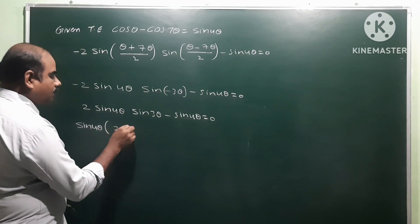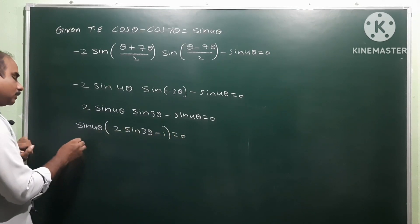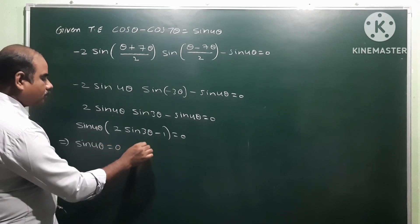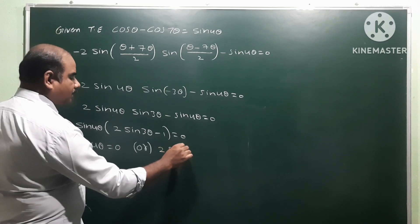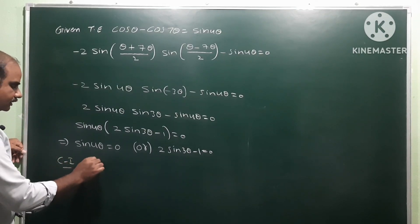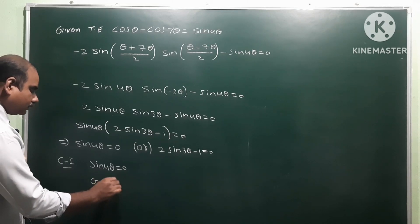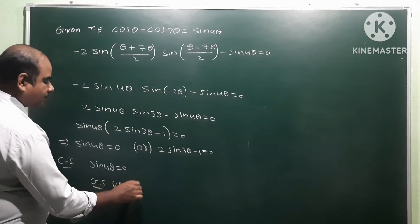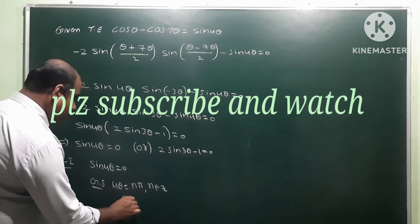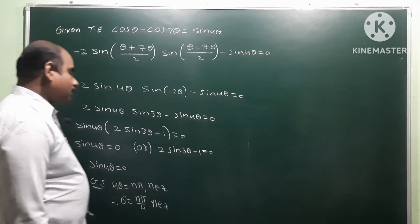Taking sine 4θ as common, the remaining factor is (2 sine 3θ minus 1), giving sine 4θ times (2 sine 3θ minus 1) equals 0. Case 1: sin 4θ equals 0. Applying the general solution formula, 4θ equals nπ where n belongs to ℤ. Therefore θ equals nπ/4, n ∈ ℤ. This is the first general solution.